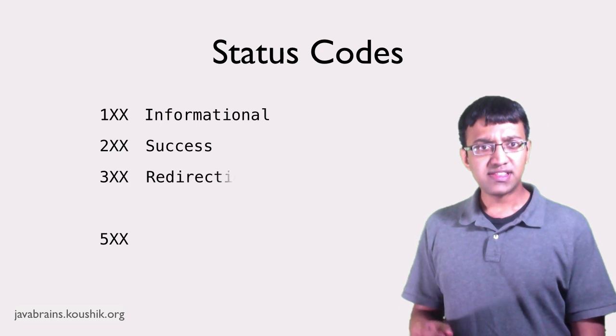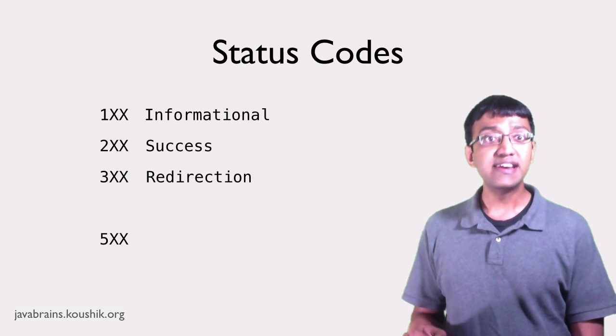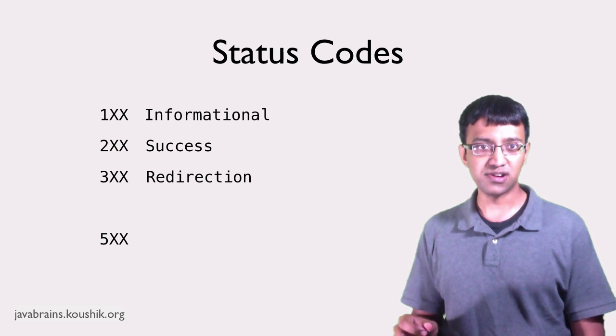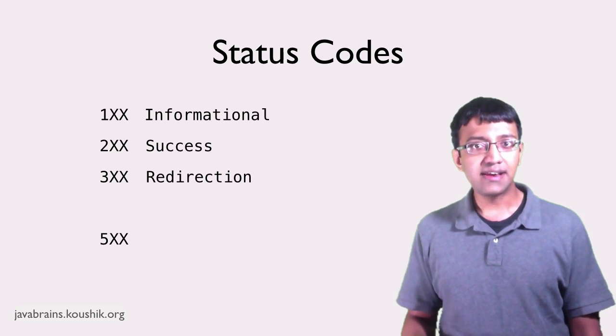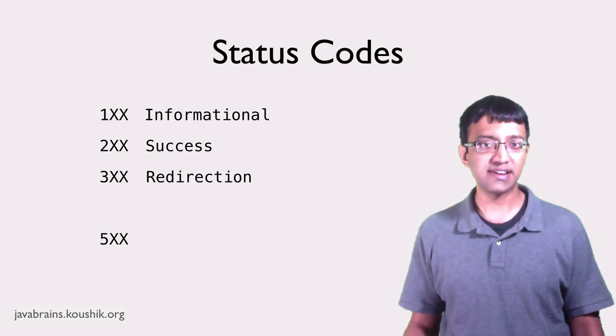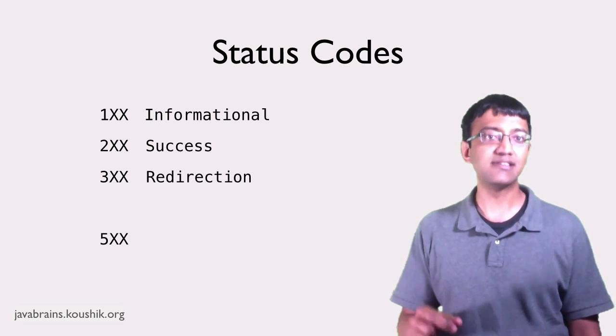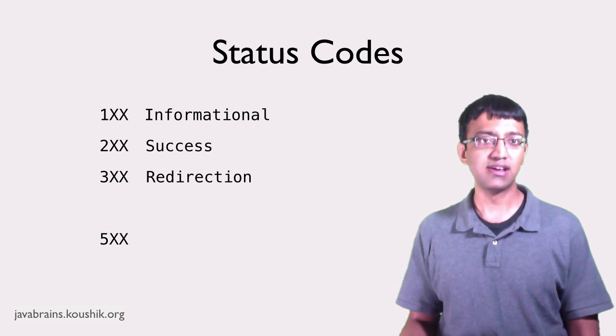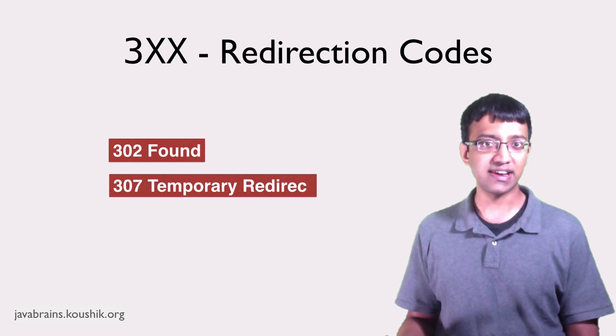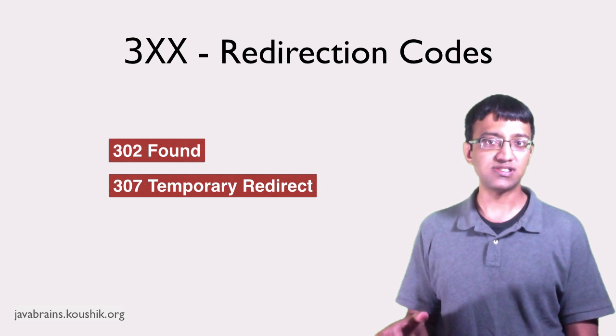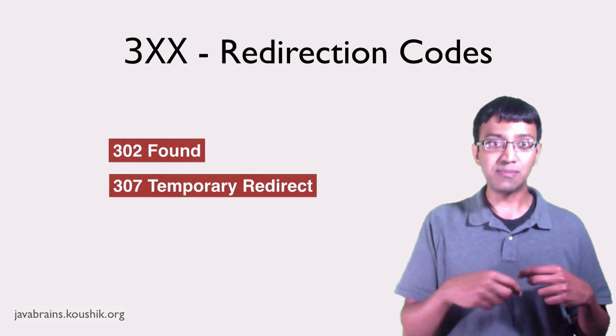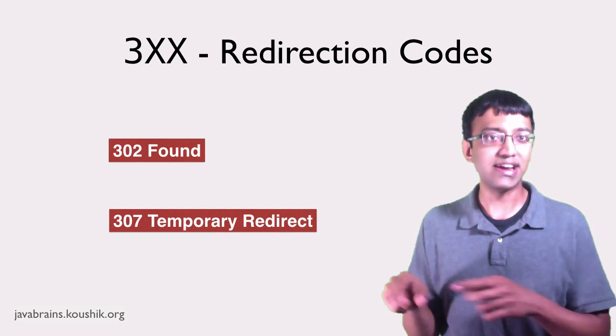The codes starting with the digit 3 are redirection codes. These codes are used by the server to ask the client to do further action to complete the request. For example, it could be a redirect asking the client to send the request somewhere else. So the codes 302 Found or 307 Temporary Redirect are one of the two error codes sent by the server to ask the client to say, hey, don't ask me, ask this other URL. It's a redirect.